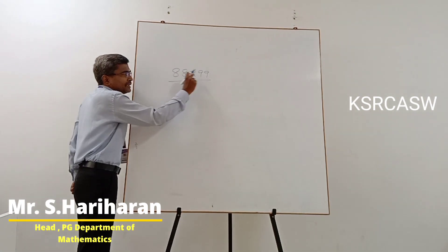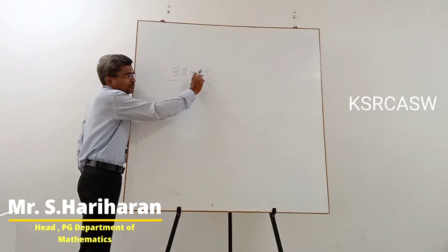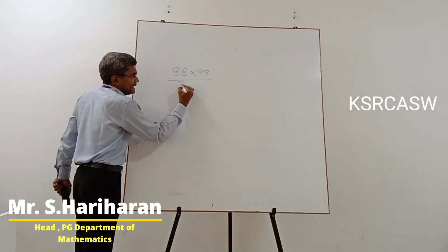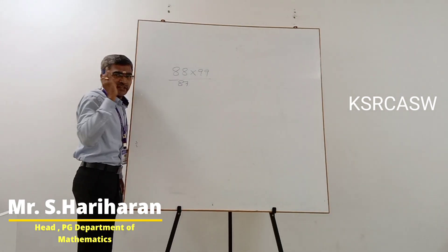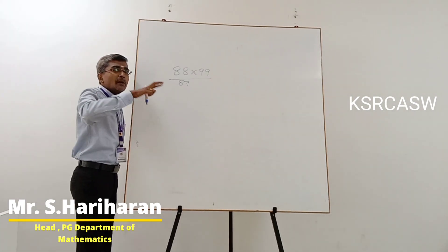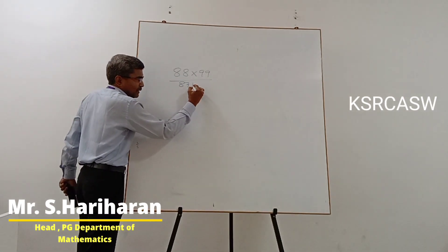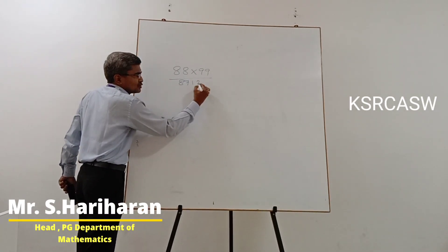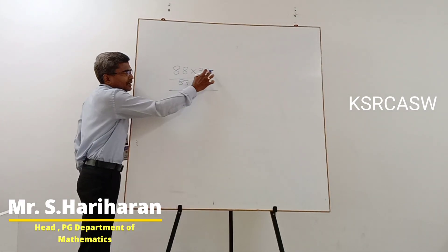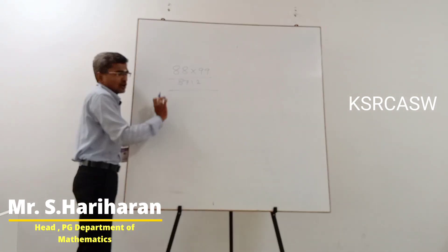So, 88 into 99. The very first step: 88 minus 1 gives answer 87. The next part — the remaining 2 digits: 9 minus 8 gives 1, and 9 minus 7 gives 2. So the final answer: 88 into 99 is 8712.